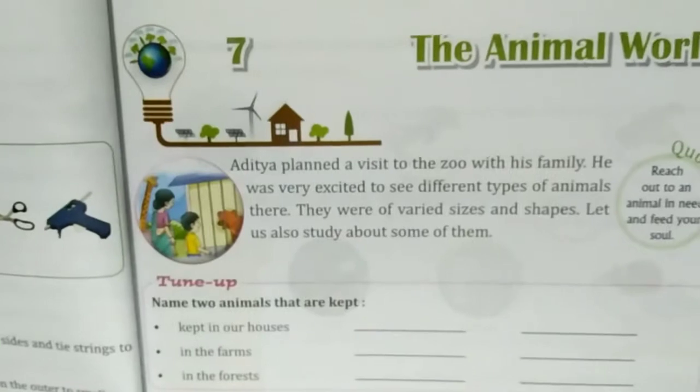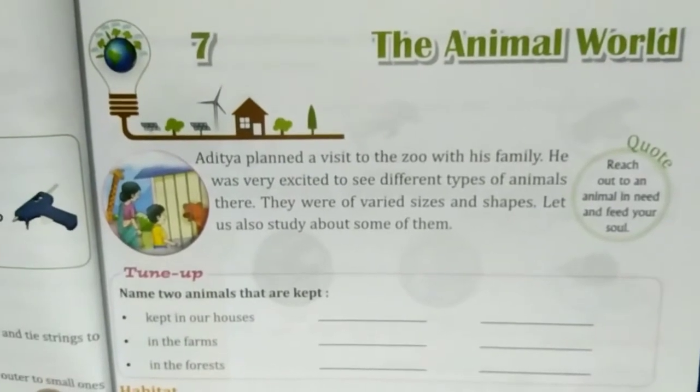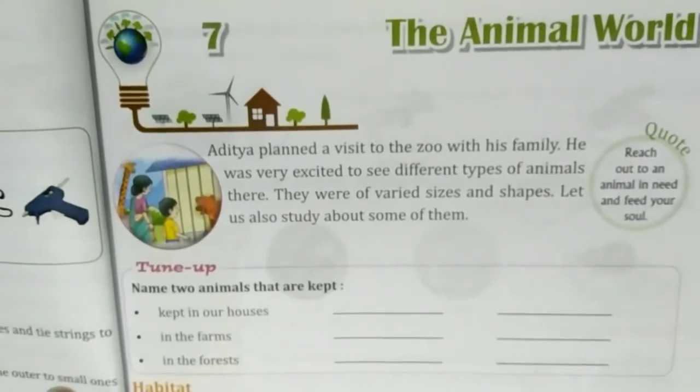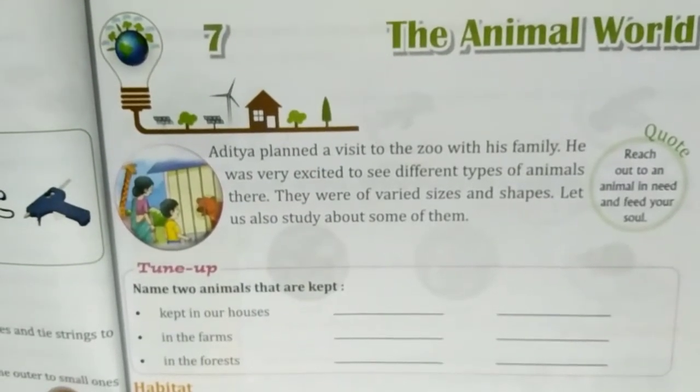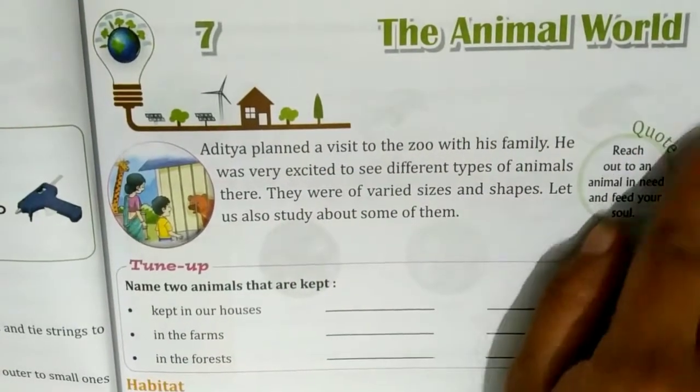Good morning students, welcome to the Rainbow's online classes. Today's session is Class 3 EBS Chapter number 7, The Animal World.